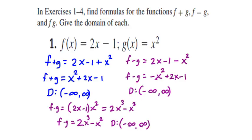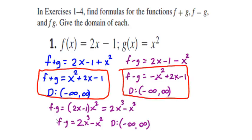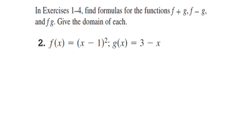So we'll go ahead and box in all these answers. This is for f plus g, f minus g, and finally fg or f times g. Let's go to our next odd number problem, which is number 3.